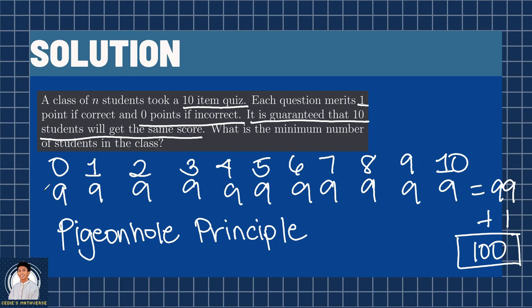If you place it on 0, it becomes 10 students, and if you place it on 10, it will have the same result. So, our answer for this problem is 100.